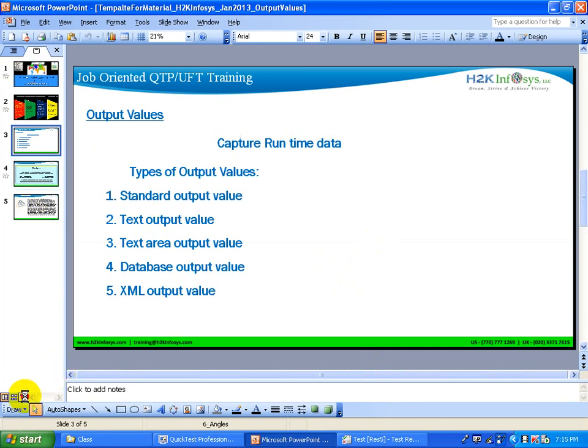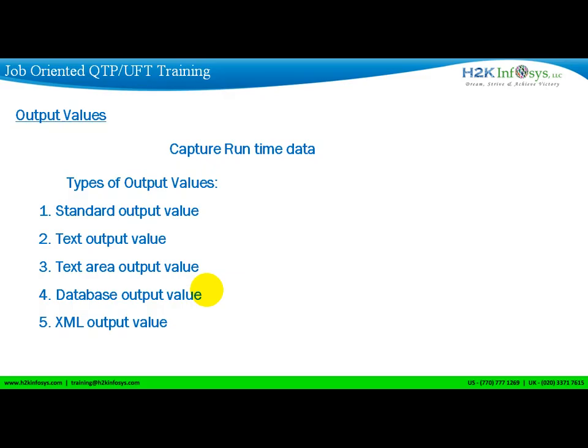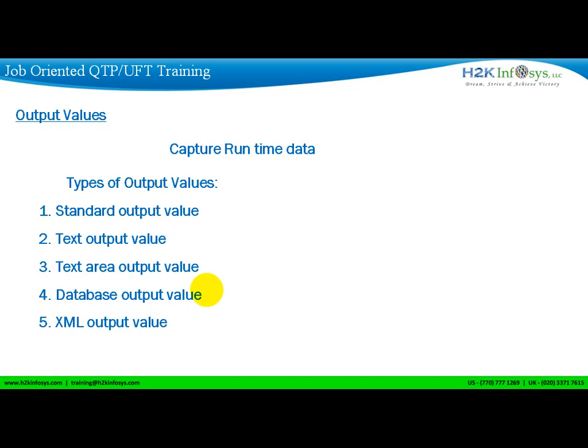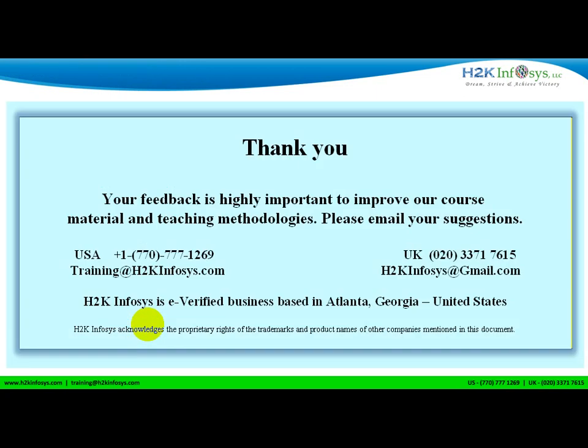The runtime data table is where you get the results — it outputs the data the application generates. The design-time data table is where the script reads the input data. There are other output value types like database and XML checkpoints that we will discuss in other videos. Thank you for watching. Talk to you soon. Have a good day.